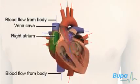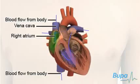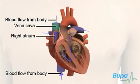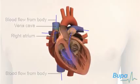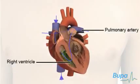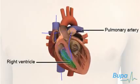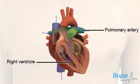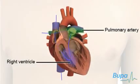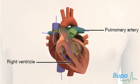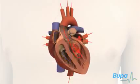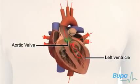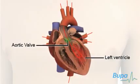The right atrium receives blood with little oxygen from the body via the vena cava. This blood passes into the right ventricle, which pumps it into the pulmonary artery and back to the lungs to have oxygen added to it.